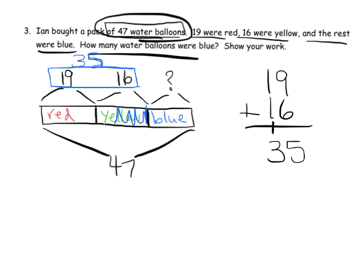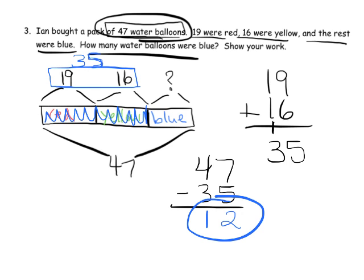So this whole piece right here is 35. Now we're going to do 47 take away 35, or subtract 35. There's no rebundling necessary or unbundling on this problem. It's pretty straightforward. Seven minus five is two, four tens minus three tens is one ten, so the answer is 12 blues. There were 12 blue balloons.